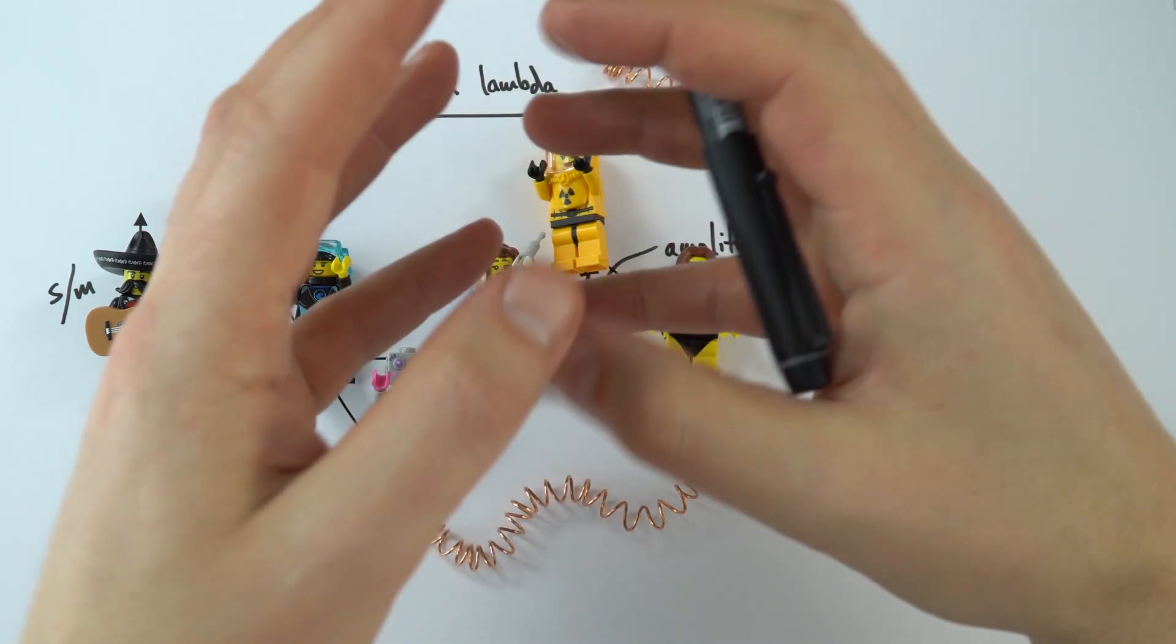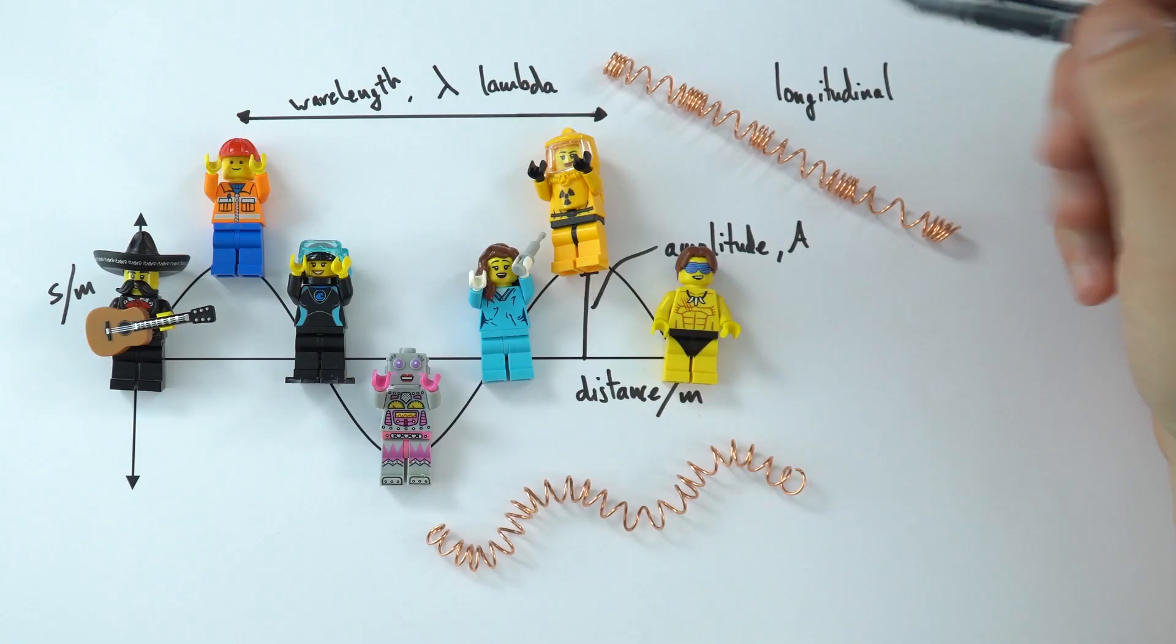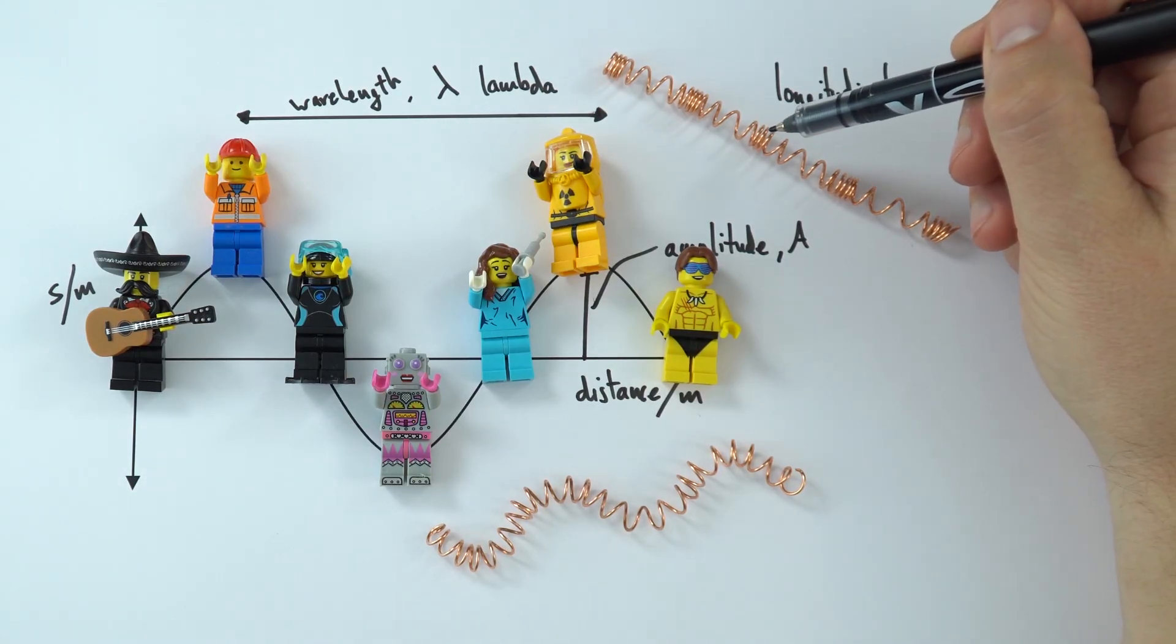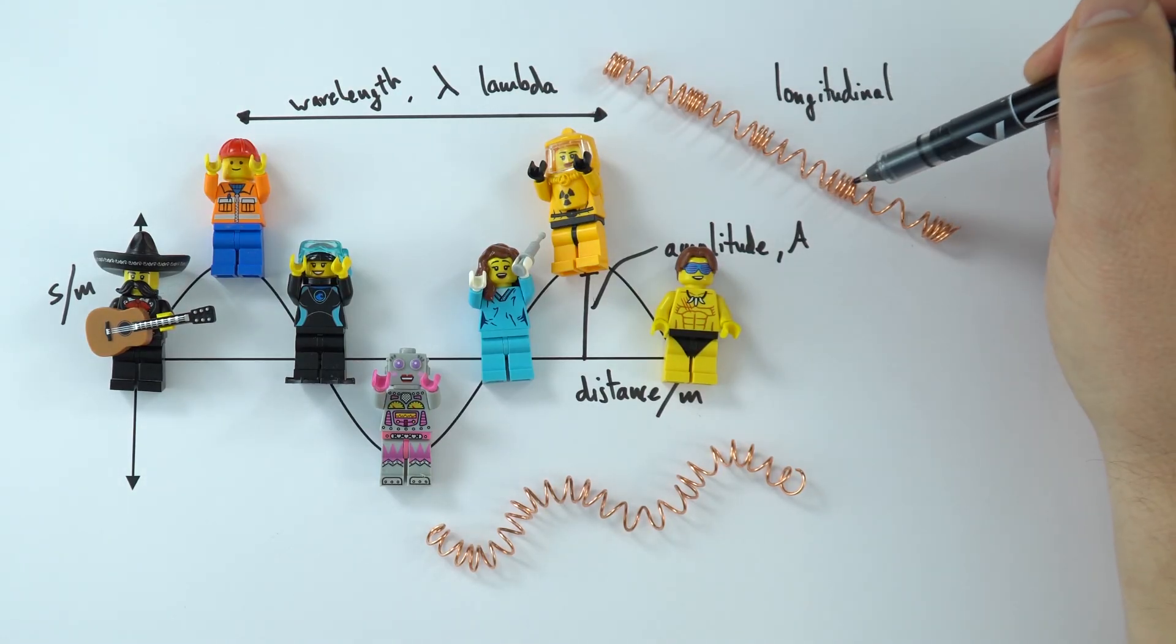Rarefaction is where effectively all the particles are slightly more spread out than usual. And if we wanted to look at the wavelength, it's really the distance from one area of compression to the next.